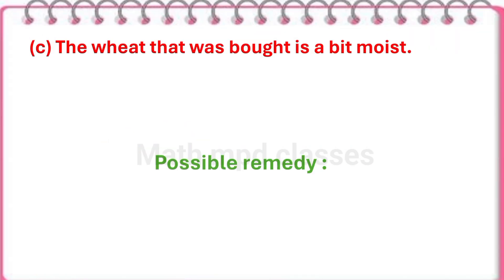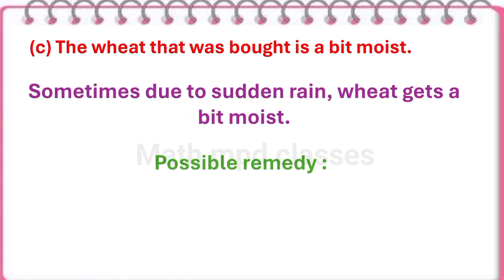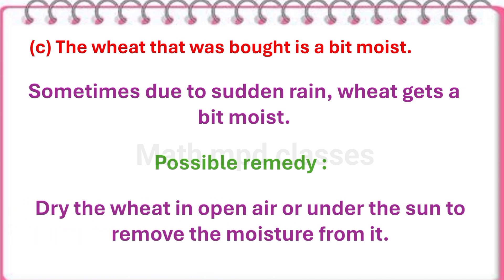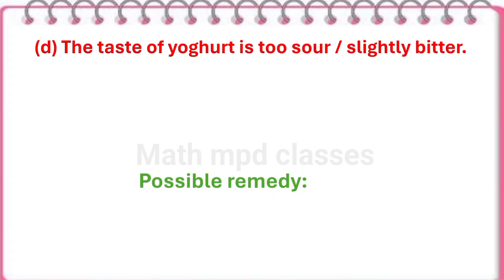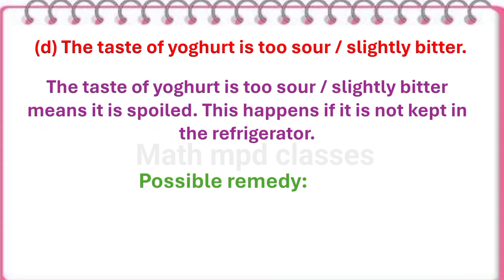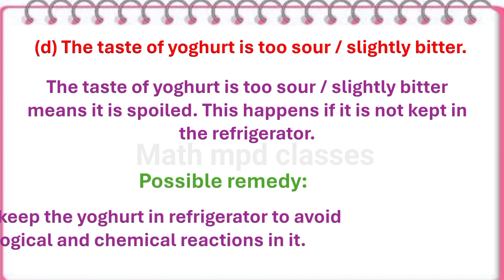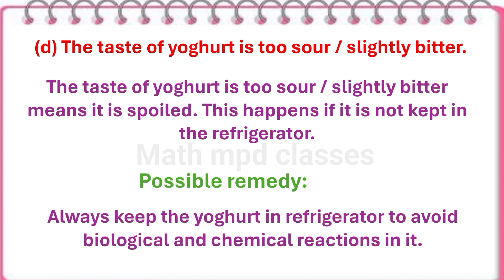Next question: The wheat that was bought is a bit moist. Sometimes, due to sudden rain, wheat gets a bit moist. Possible remedy: dry the wheat in the open air or under the sun to remove the moisture from it. Next: The taste of yogurt is too sour or slightly bitter, meaning it is spoiled. This happens if it is not kept in the refrigerator. Possible remedy: always keep the yogurt in the refrigerator to avoid biological and chemical reactions in it.